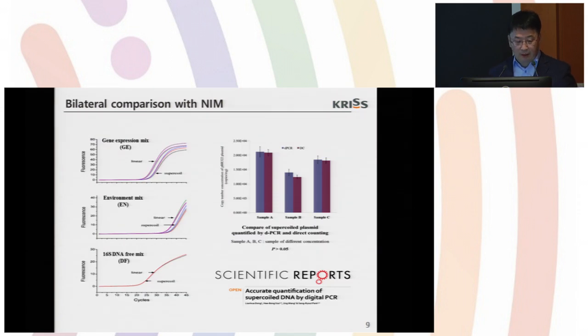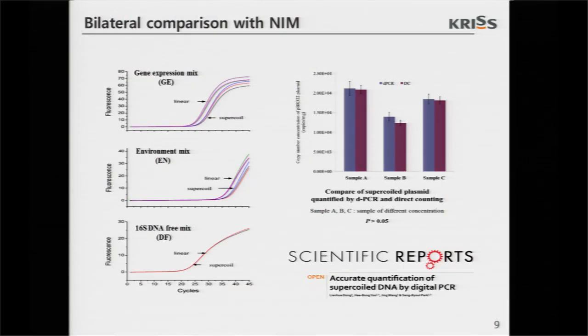And we also conducted bilateral comparison with NIM China. It is hard to quantify supercoil plasmid based on digital PCR. And NIM China optimized the condition and measured the supercoil DNA by dPCR, and CCQM provided counting results. And the results were published in Scientific Reports by China colleagues in 2015.